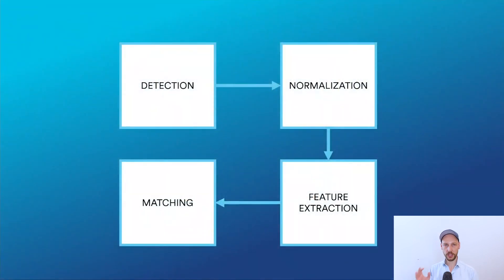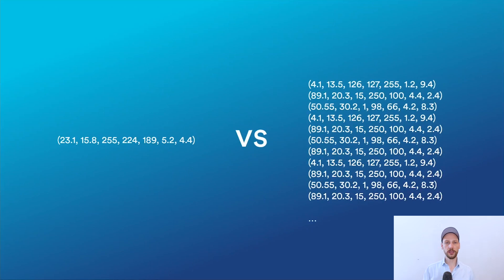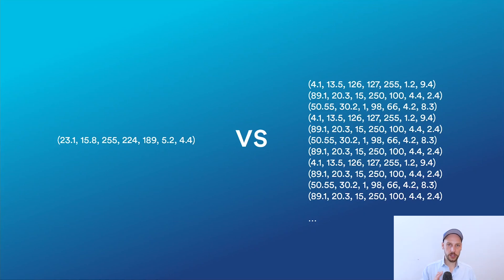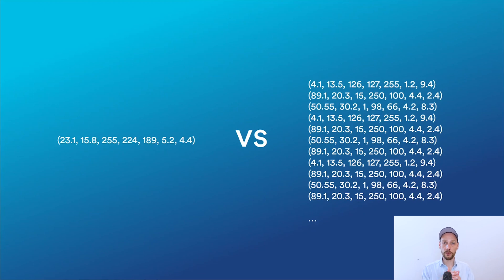That leads us to the final step: matching, where we take this feature vector and compare it to all the other vectors in our database. That database might contain a million, tens of millions, hundreds of millions, even billions of faces. You won't find the exact same string of numbers in the database, because lighting, resolution, or expression will differ between images of the same person. So you're not looking for an exact match, but the closest match — calculating the distance between vectors and finding one close enough to say it's the same person.